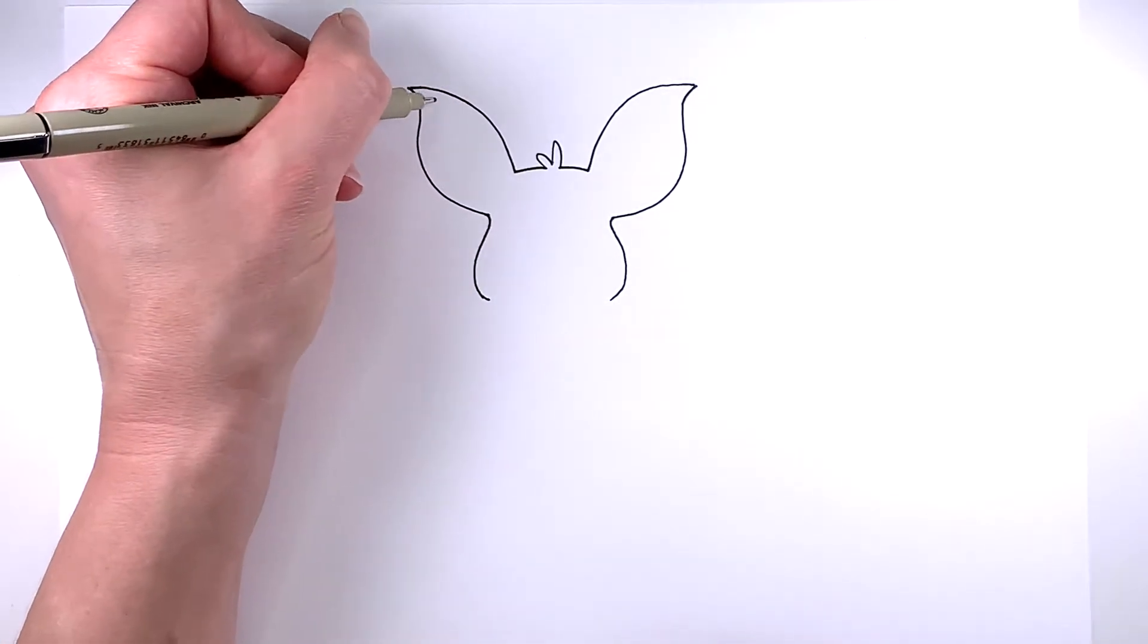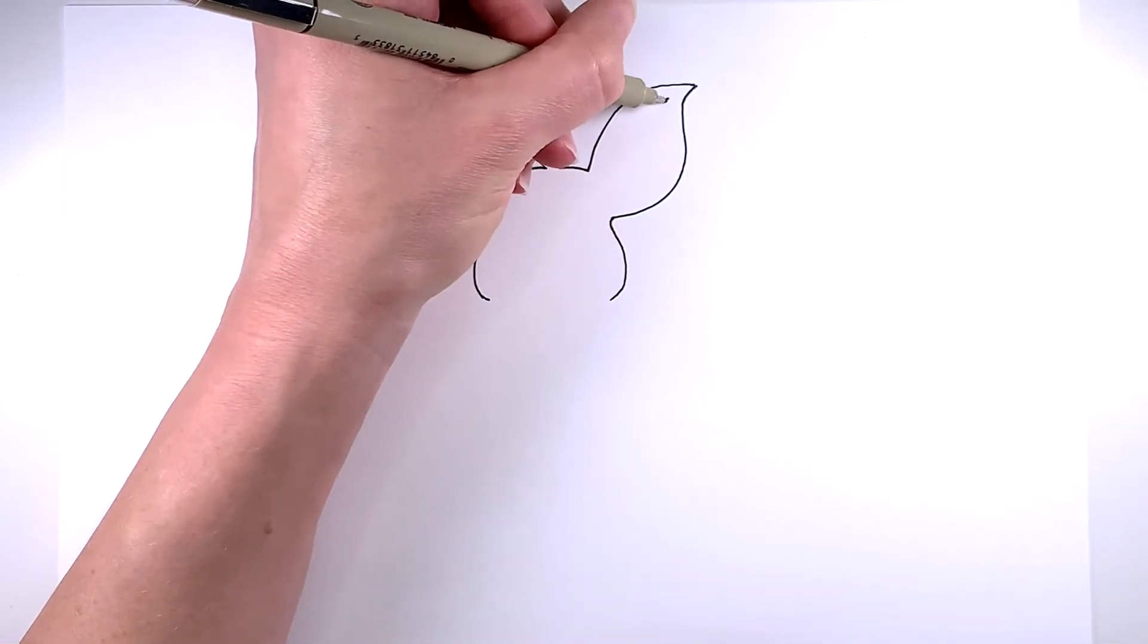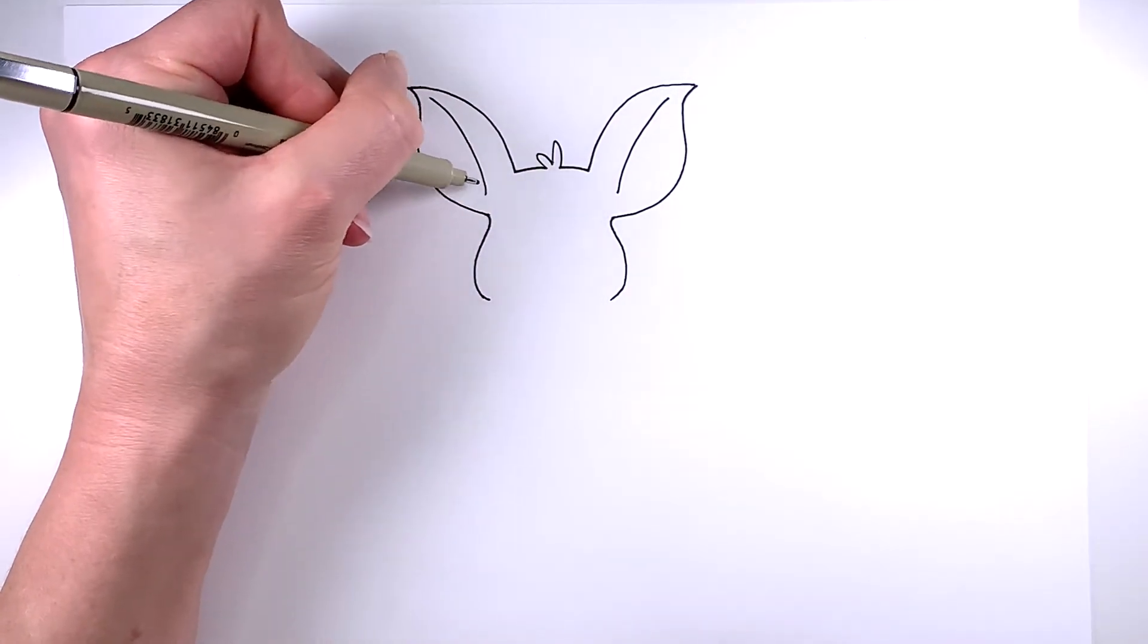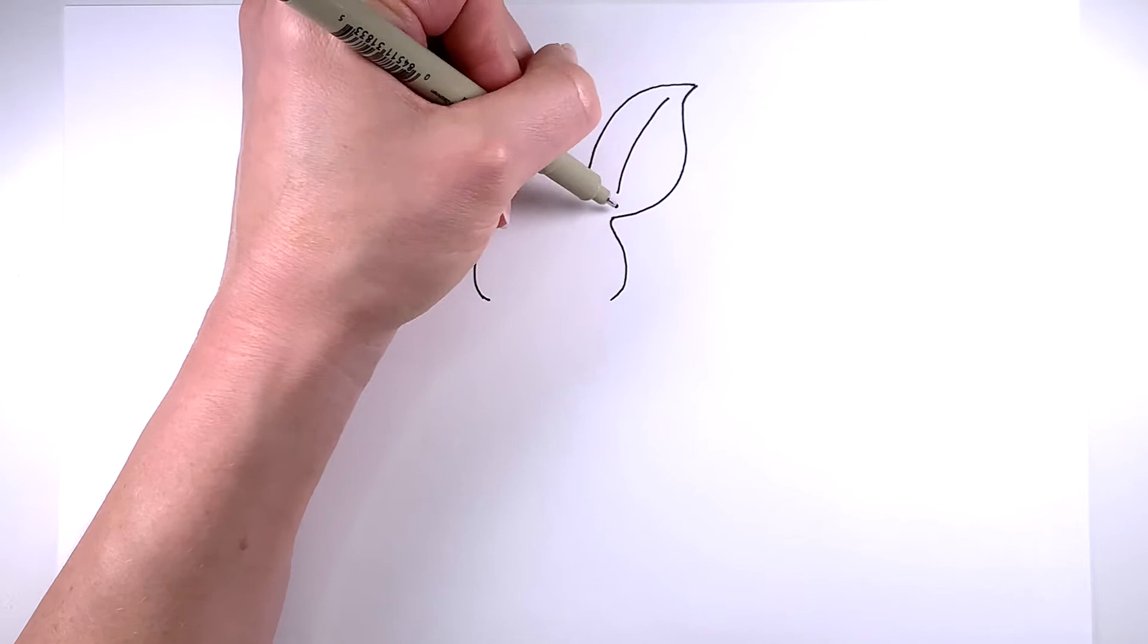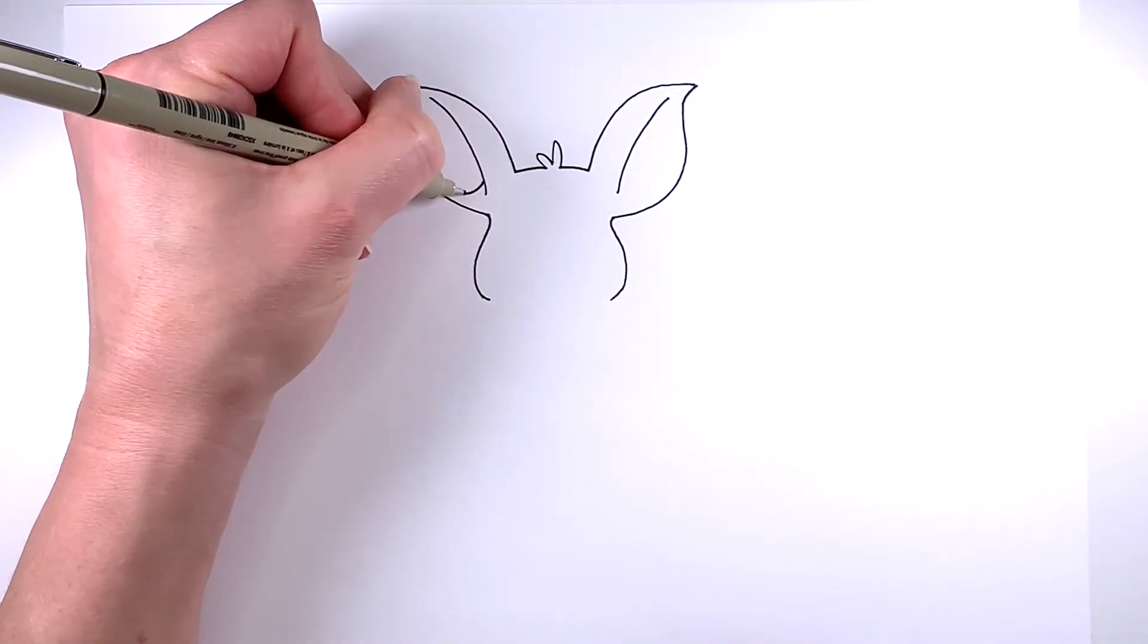Now I'm going to add some detail to the ears. Just drawing a nice curve from the top down to the corners of his ear. And then let's draw some little ear tufts there.